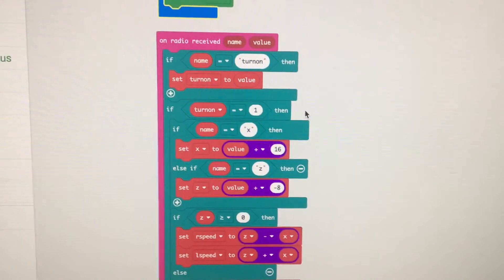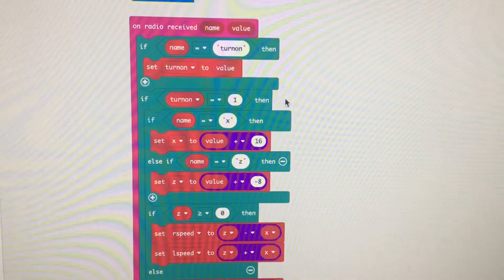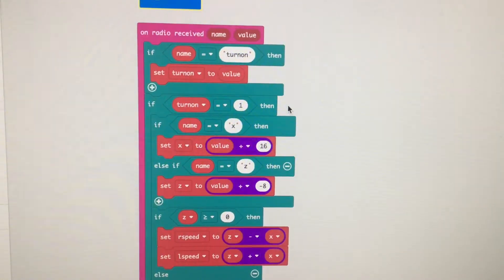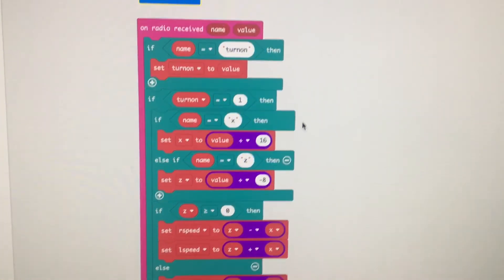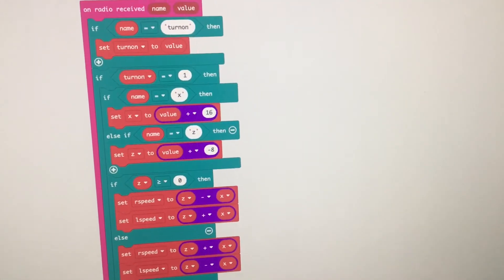Then we have the main loop. If turn on equals one, that means if it's turned on, then do this whole next section. Do this whole next section here.